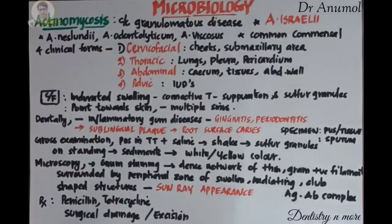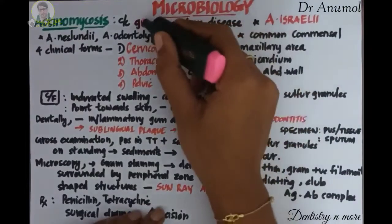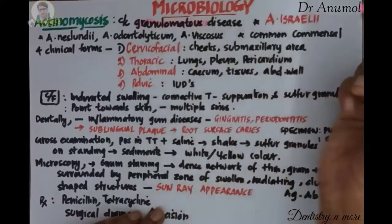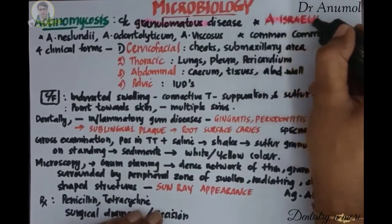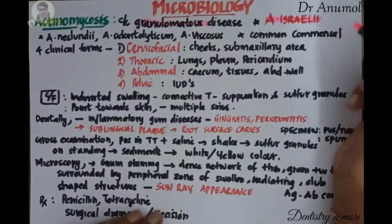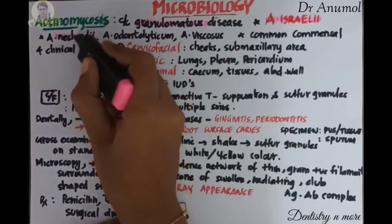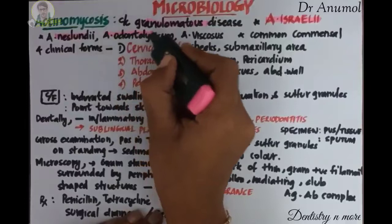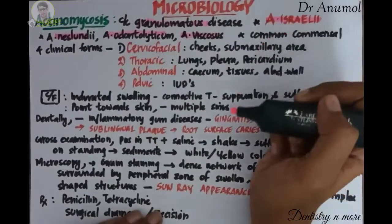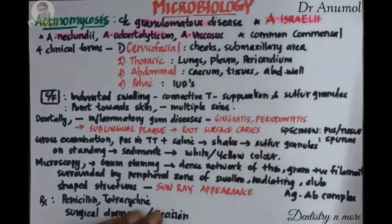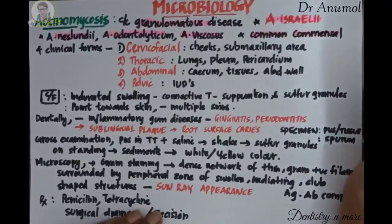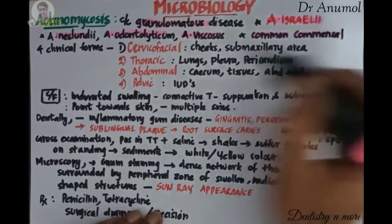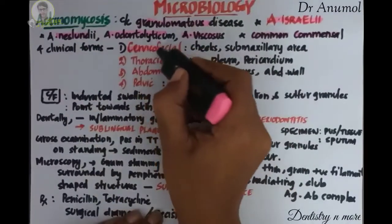Actinomycosis is a chronic granulomatous disease. The major causative agent is Actinomyces israelii, and it can also be caused by Actinomyces naeslundii, Actinomyces odontolyticus, and Actinomyces viscosus. Usually this Actinomyces species is found as a common commensal in the human body.